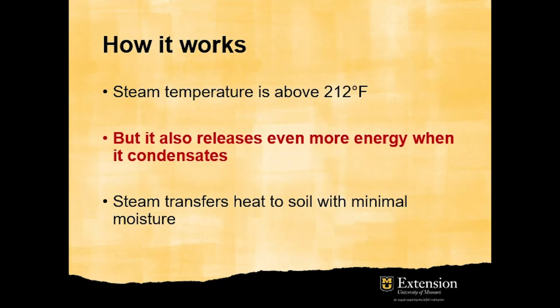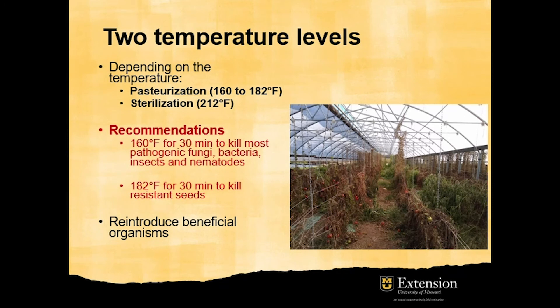Steam temperature is above 212 degrees Fahrenheit, but it also releases a large amount of energy when it condensates, so steam heats up the soil with minimal moisture. Depending on the temperature, we're talking about soil pasteurization or soil sterilization. Based on recommendation, soil steaming is actually a soil pasteurization process. 160 degrees Fahrenheit for 30 minutes will kill most pathogenic fungi, bacteria, insects, and nematodes. Some seeds are pretty resistant to temperature, but in general, 182 degrees Fahrenheit for 30 minutes will kill practically all weed seeds. At high temperatures, it might be necessary to reintroduce beneficial organisms.